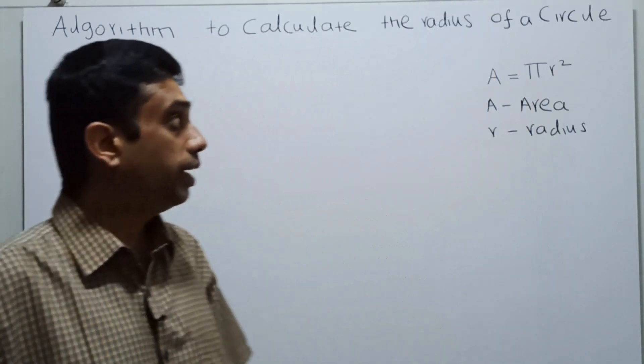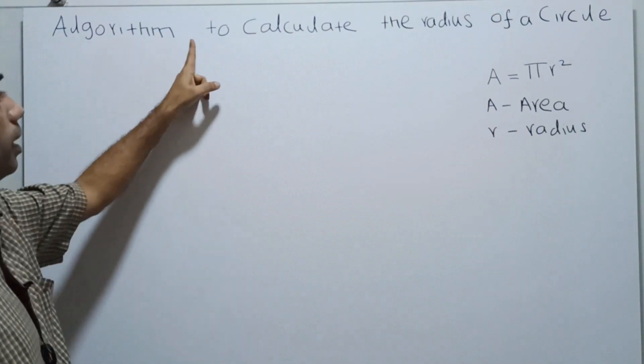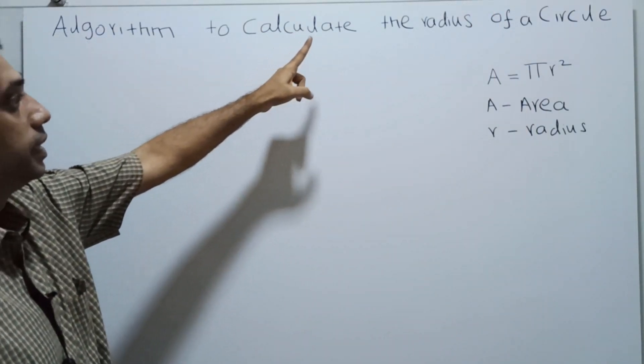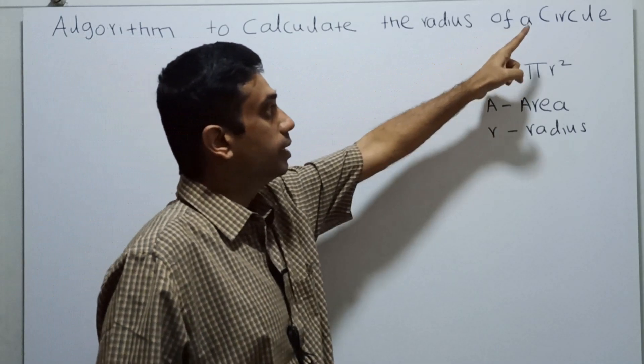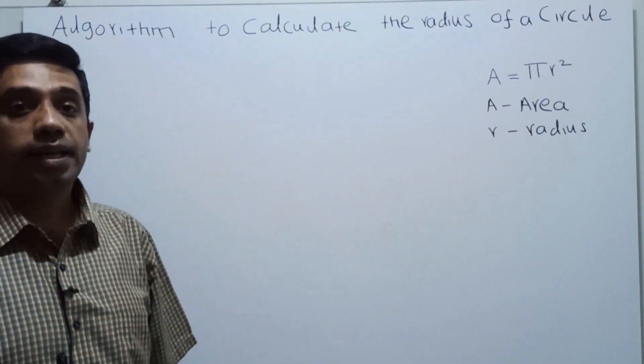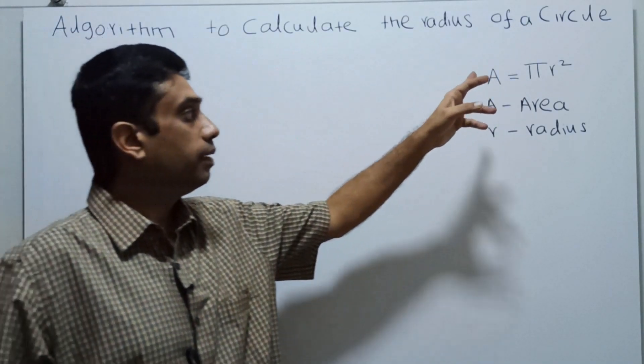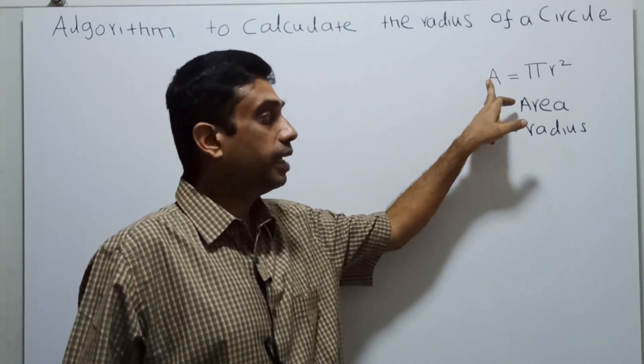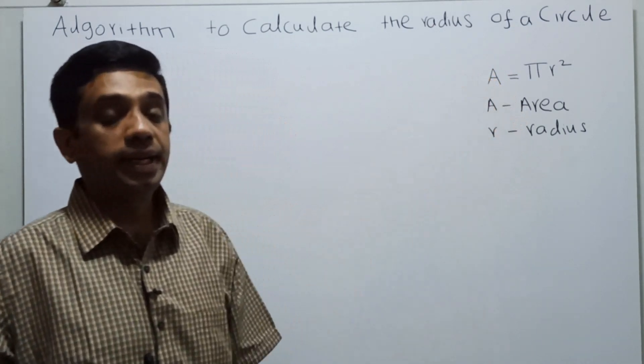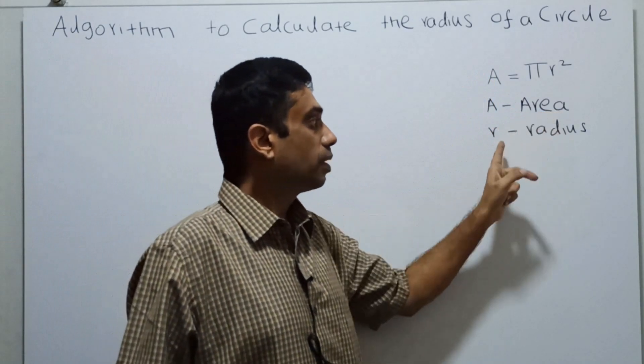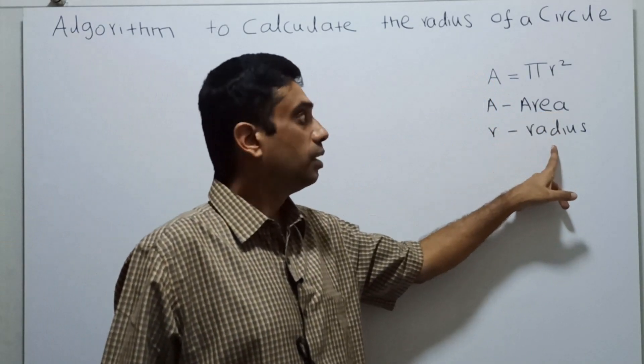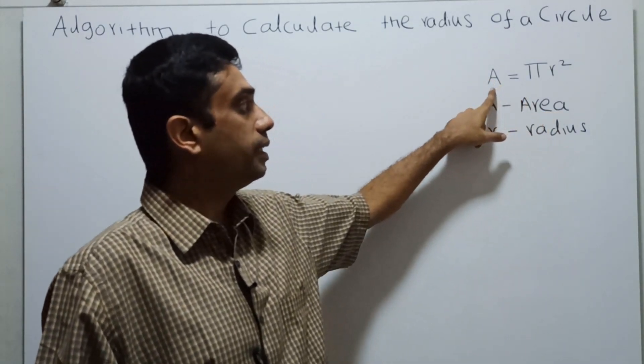Hi friends, today we are going to write an algorithm to calculate the radius of a circle. How to calculate the radius of the circle from the given area? A stands for given area, we have to find the radius of the circle. So A stands for area, r stands for radius.